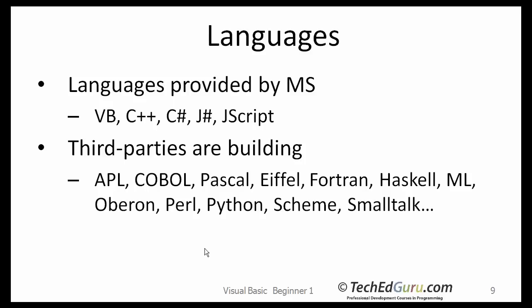The languages provided by Microsoft that run with .NET are Visual Basic, C++, C Sharp, J Sharp, JScript, etc. There are many third-party languages also available that run and use .NET. For example, there is APL, a version of COBOL, a version of FORTRAN, and many others that are shown on this list here.